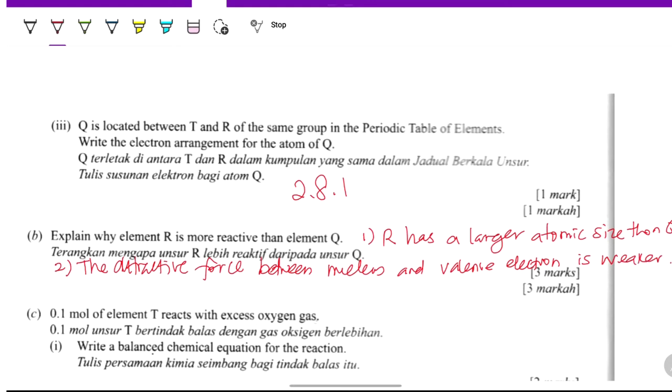Because the distance is further, the valence electrons of R is released or can be released easily than Q.